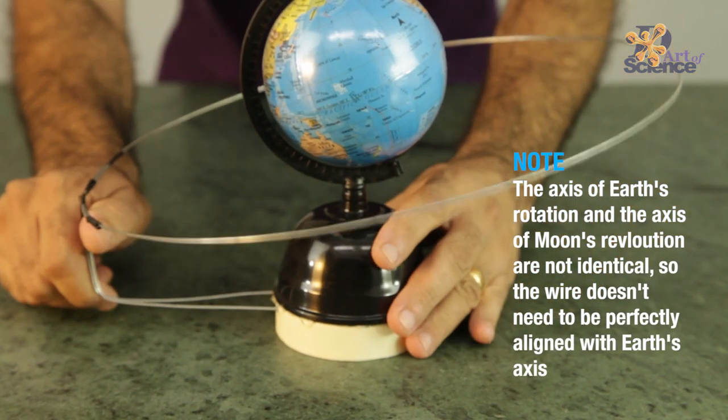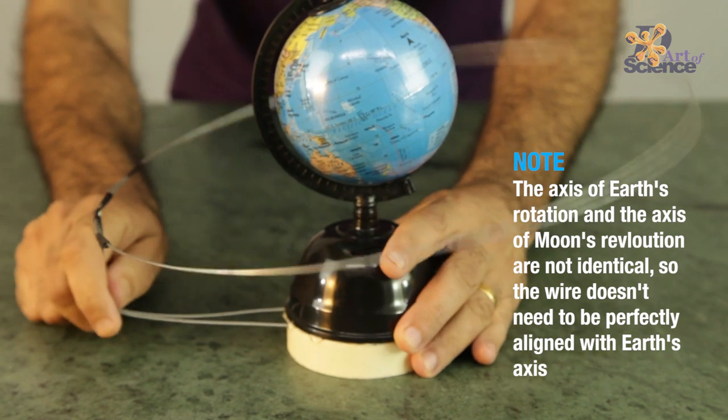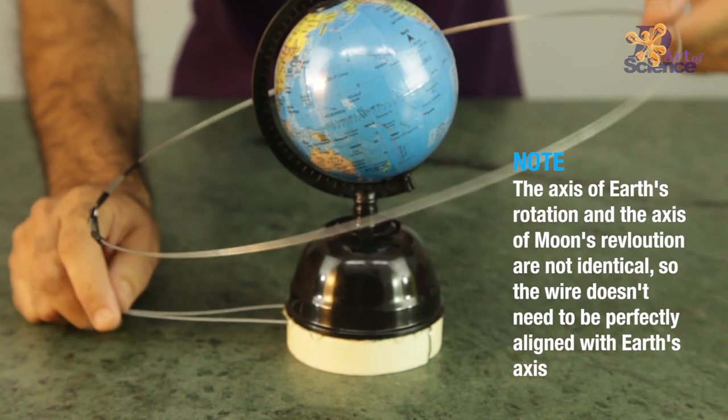Actually the axis of earth's rotation and the axis of moon's revolution are not identical. So we need not bother to make it perfectly aligned.